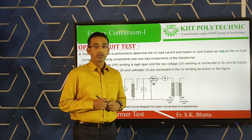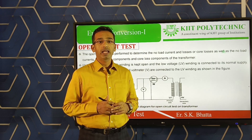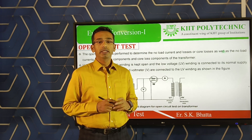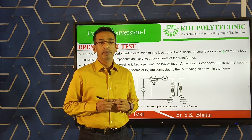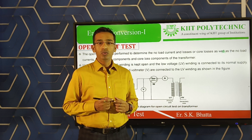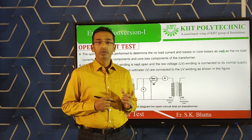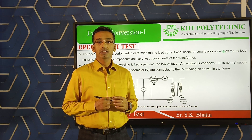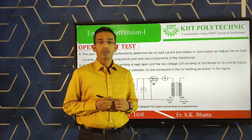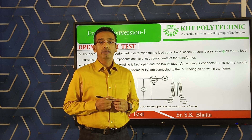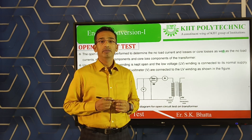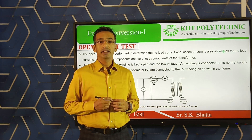Before coming to the open circuit test, let us understand why we are conducting tests on a transformer. Through these tests we can calculate some parameters as well as the losses occurring in the transformer — the core loss or iron loss, and the copper loss. Using these parameters and losses we can calculate the voltage regulation as well as the efficiency of the transformer.